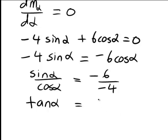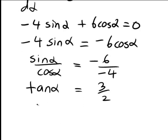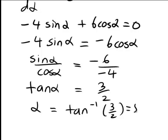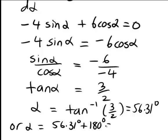So we now solve this for alpha. If we find the inverse tan of 3/2, that will give us one possible value of alpha. Working that out gives a value of 56.31 degrees. A little bit of care is required here because the tangent function has a period of 180 degrees, so it is also possible that alpha might be equal to 56.31 degrees plus 180, giving us 236.31 degrees.